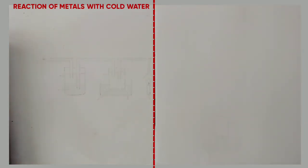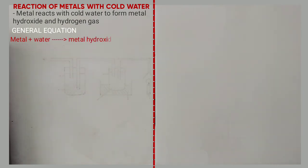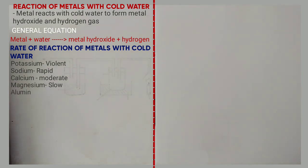Now look at the reaction of metals with cold water. Metals react with cold water to form metal hydroxide and hydrogen gas. The general equation is: metal + water → metal hydroxide + hydrogen gas. The rate at which metals react with cold water depends on their position in the reactivity series: potassium — violent; sodium — rapid; calcium — moderate; magnesium — slow. The rest of the metals — zinc, iron, copper, lead, and aluminium — do not react with cold water.